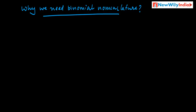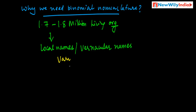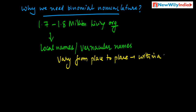Why do we need binomial nomenclature? As you know, there are around 1.7 to 1.8 million living organisms identified. Just imagine, you call them with different names — those are called local names, also called vernacular names. Vernacular names are not scientific. They vary from place to place, even within a country. Hence, there is a need to standardize.